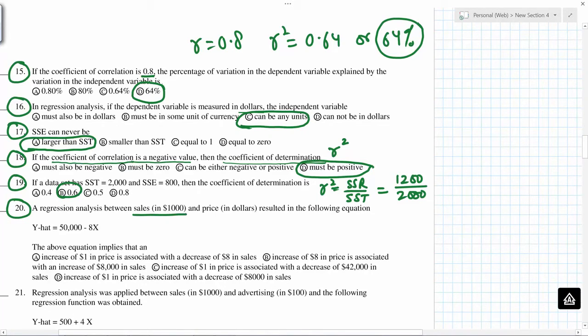So sales in thousands, price in dollars. So increase of $1 in price associated with decrease of $8 in sales. Because this is in thousands, $1 will mean actually 8 times thousands, so decrease of $8,000. This is not correct, t is the correct answer.